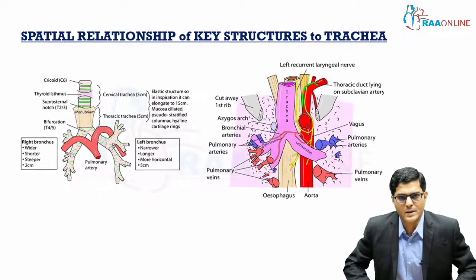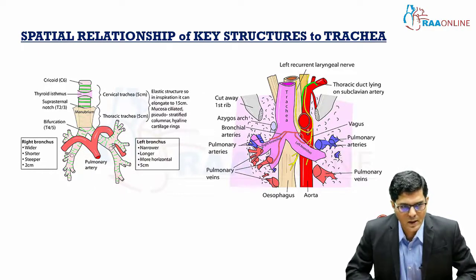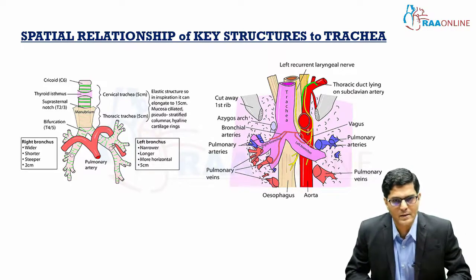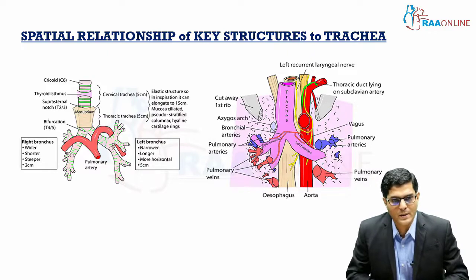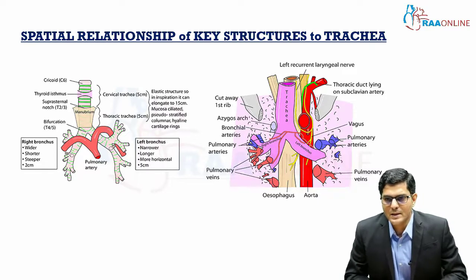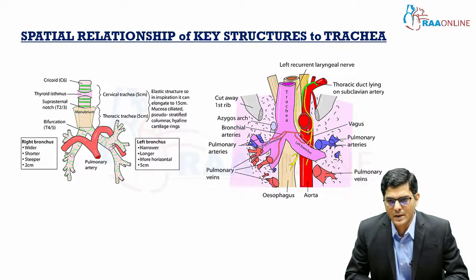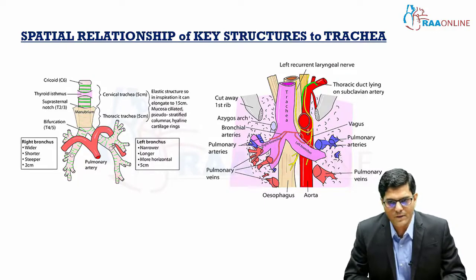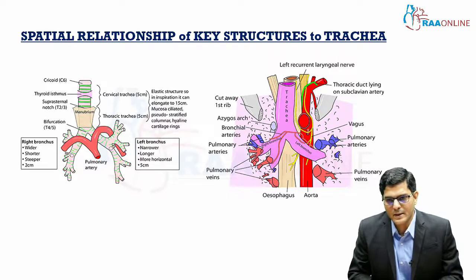This is a pictorial representation of the spatial relationship of key structures to the trachea. As you can see, the right main bronchus is wider, shorter, and steeper — about two centimetres from the carina — while the left bronchus is narrower, longer, and more horizontal. During intubation, the endotracheal tube commonly goes into the right bronchus for these reasons. The diagram also shows the relationship of pulmonary veins, pulmonary arteries, aorta, and recurrent laryngeal nerve to the trachea. Blood supply from the descending thoracic aorta and left subclavian artery means the left bronchus is more richly supplied than the right.